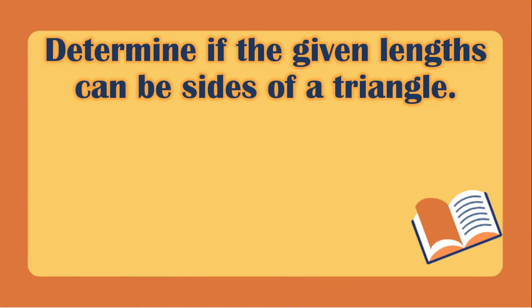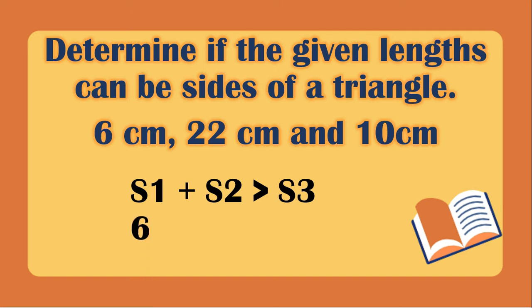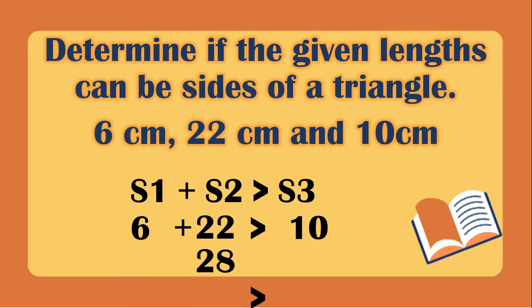Let's have another example. Determine if the given lengths can be sides of a triangle. We have 6 cm, 22 cm, and 10 cm. First, we will add the first and second side — it should be greater than the third side. The first side is 6 plus 22, greater than 10. 6 plus 22 is 28, and 28 is greater than 10. This is correct.